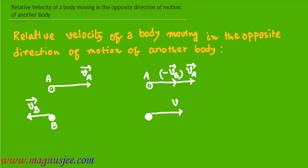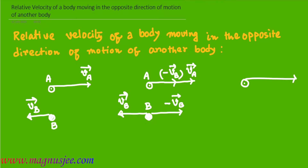For body B, we consider minus vB, the opposite velocity of body B — vB is the actual velocity of the body. As a result, body A will be moving with a relative velocity vector vAB, which will be equal to vector vA plus minus vector vB.